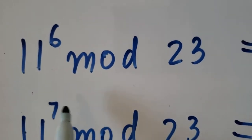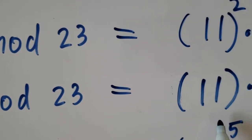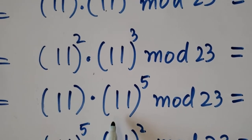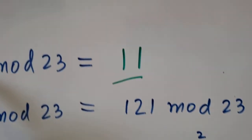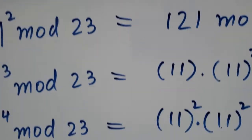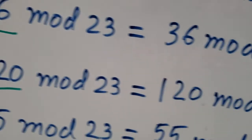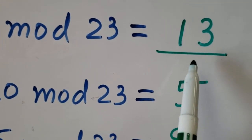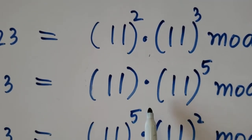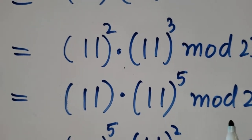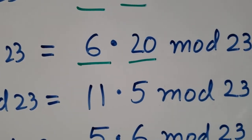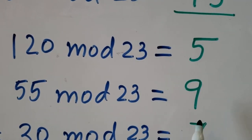For 11 to the power 6 mod 23, I take 11 times 11 to the power 5. I'm choosing this combination because 11 to the power 1 mod 23 is 11 and 11 to the power 5 is 5, which is a small number compared to 11 to the power 4 which is 13 and 11 cubed which is 20. So 11 times 5 is 55, and 55 mod 23 is 9.